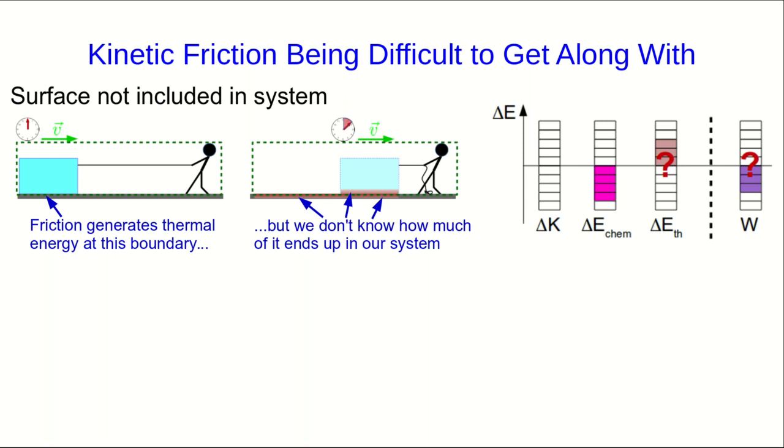We know that that external kinetic friction force will do some amount of negative work, but without knowing how to calculate the change in thermal energy of the system, we have no way of calculating how much work has been done.